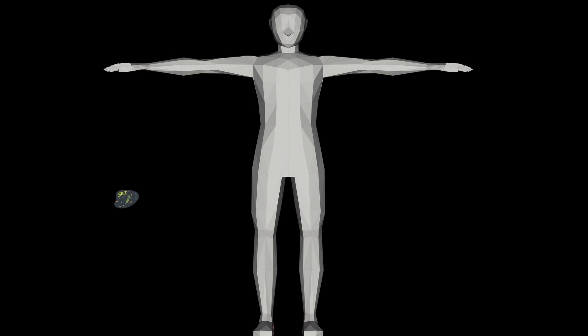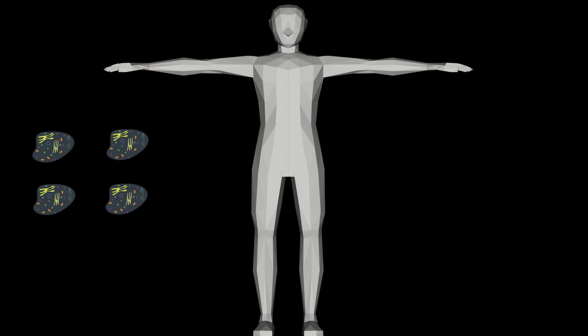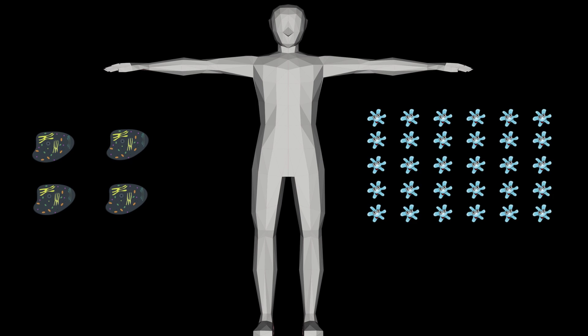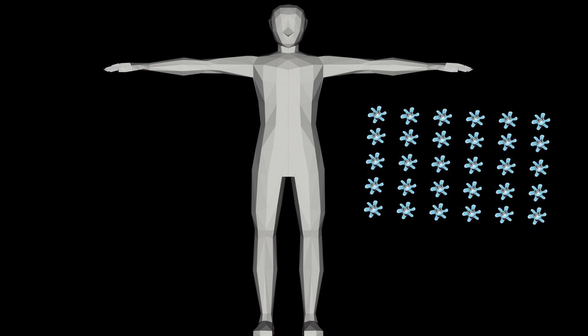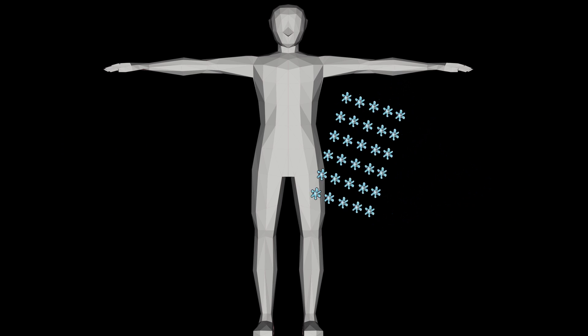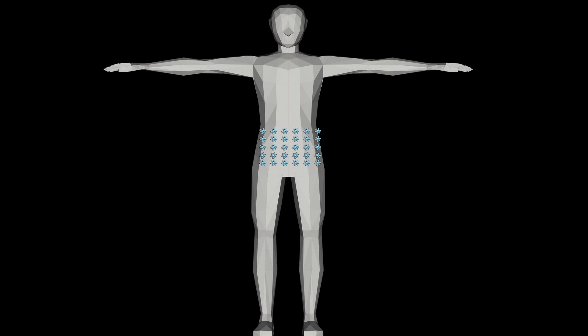Let's dive into today's video. Our human body has about 10 trillion human cells and about 100 trillion microbial cells. Most of this microbial population, also known as microbiome, resides in our gut.